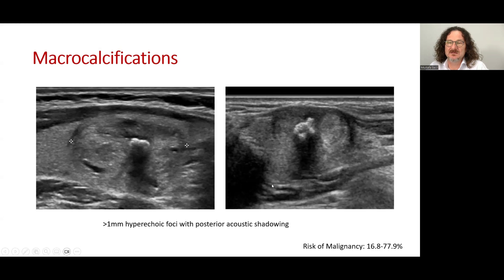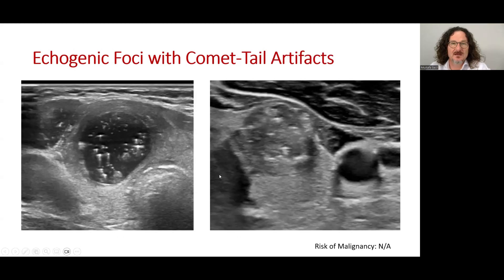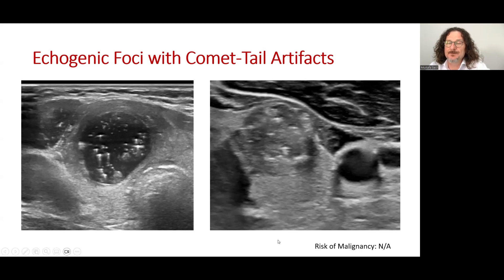This is a benign nodule and this is a malignant nodule. Two examples of peripheral calcifications: one complete, one incomplete. You also see spiculations in that example — this is a malignant nodule. Echogenic foci with comet-tail artifacts are commonly seen in colloid nodules or nodules containing colloid deposits. These are tiny reflectors with comet-tail or reverberation artifacts in the posterior areas of the bright reflectors. In some conditions, some microcalcifications may represent reverberation artifacts, so we should be careful.